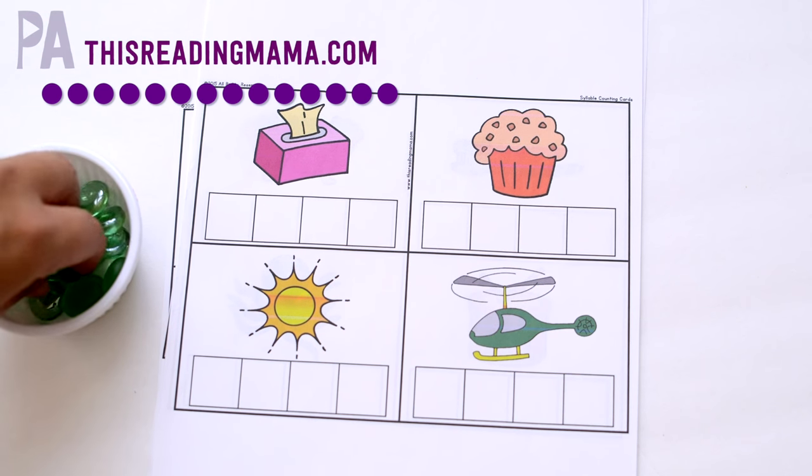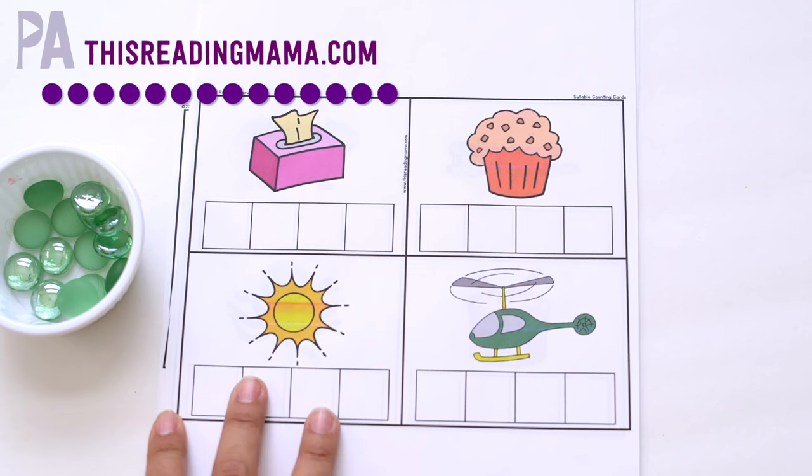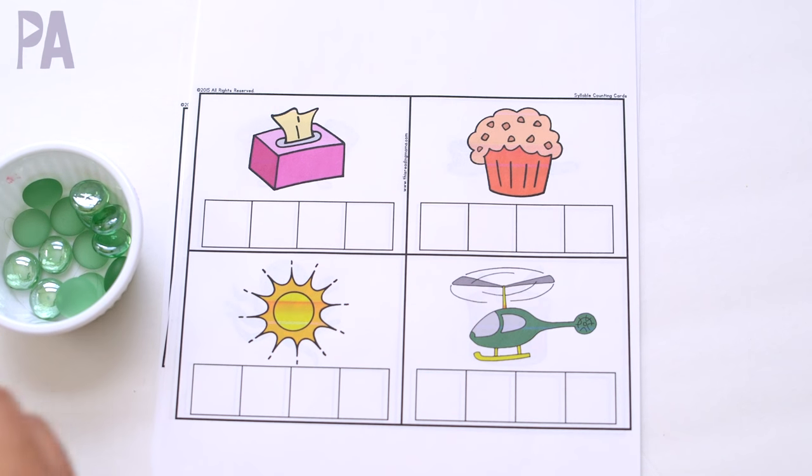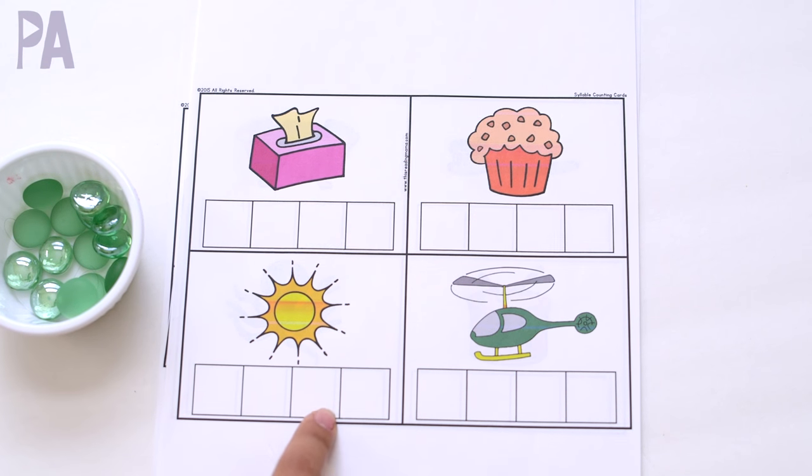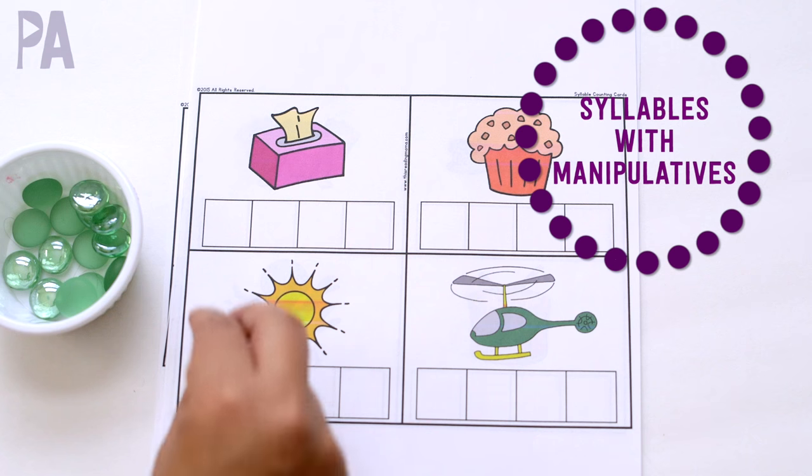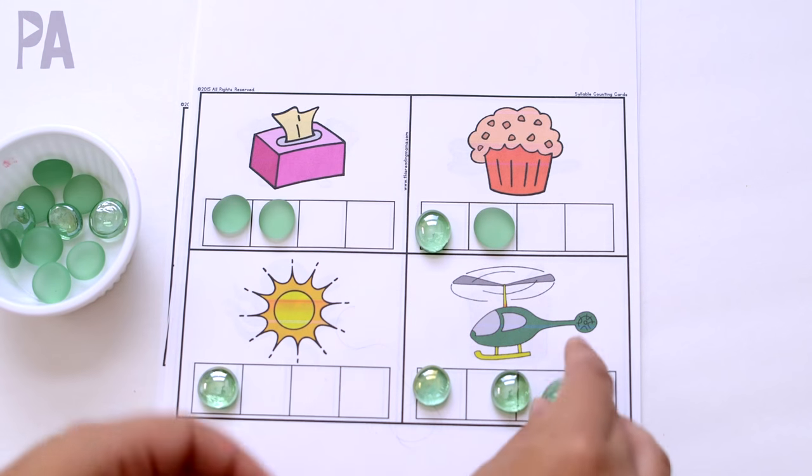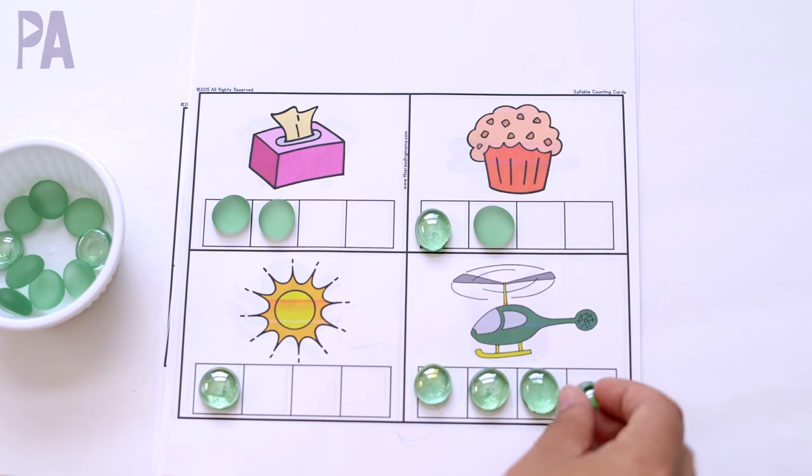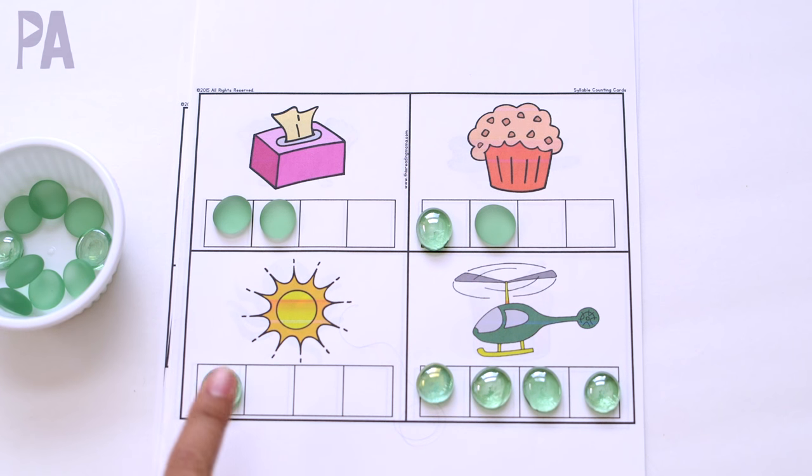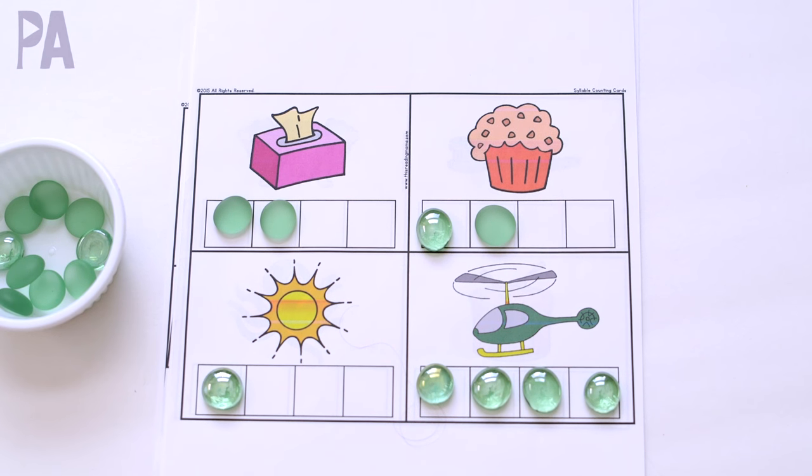This is from thisreadingmama.com, and basically what you do is you segment each picture on the card and then place one of your little manipulatives in the boxes below. So for instance, tissue, helicopter. So that way you can really hear and physically place one of these little manipulatives in each box for each syllable.